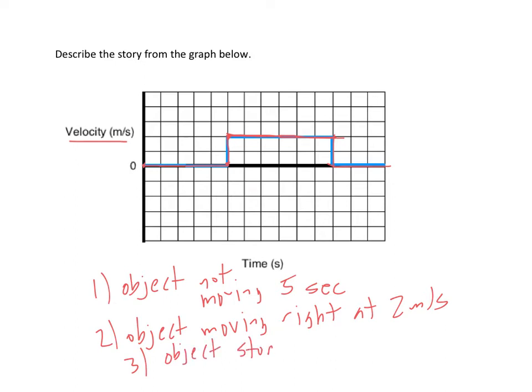So that is the story we get out of this. An object is not moving, now it's moving right, and then it stops. And that's how you read this from left to right. Let's do one more.